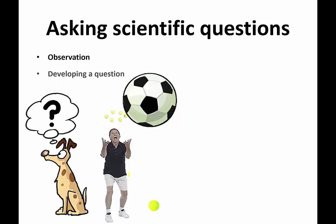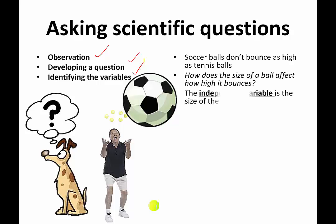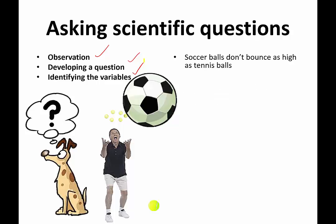A few more notes on asking scientific questions. Remember we have: observing, developing a question, and identifying the variables — independent, dependent, and controlled. Here's another example: someone observes that soccer balls don't bounce as high as tennis balls and asks the question, 'How does the size of a ball affect how high it bounces?' Someone wants to do an experiment with a giant soccer ball and small tennis balls.